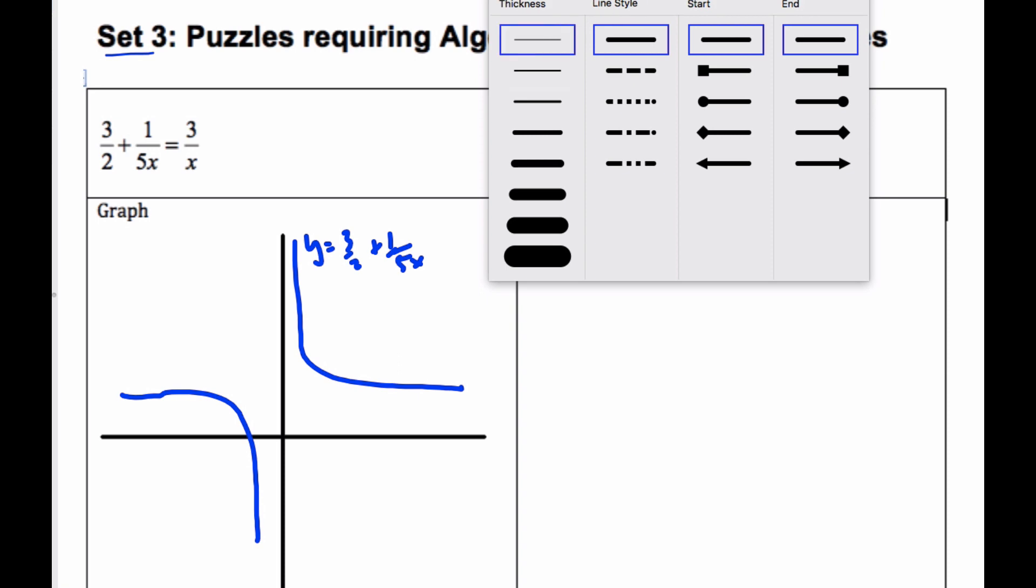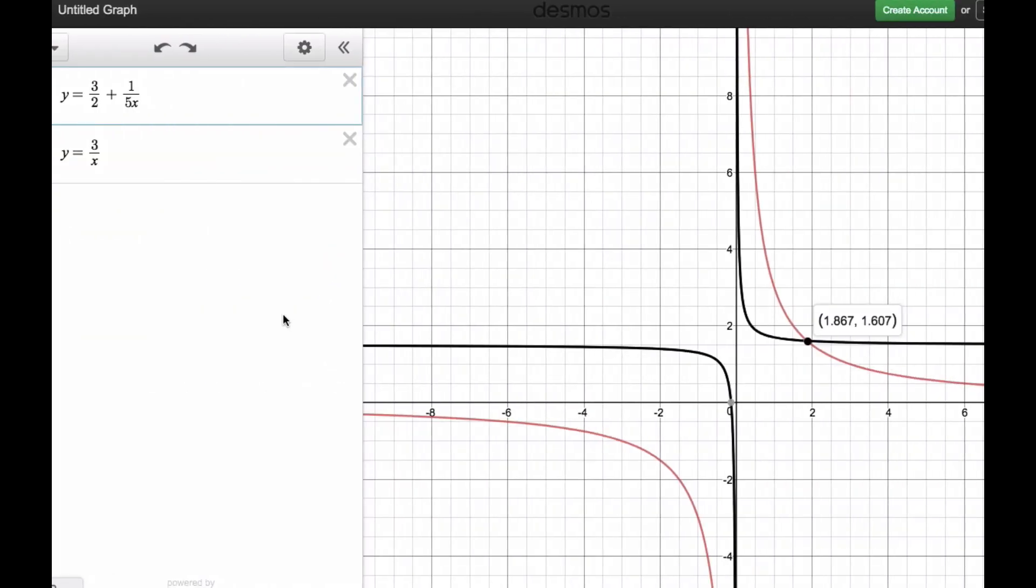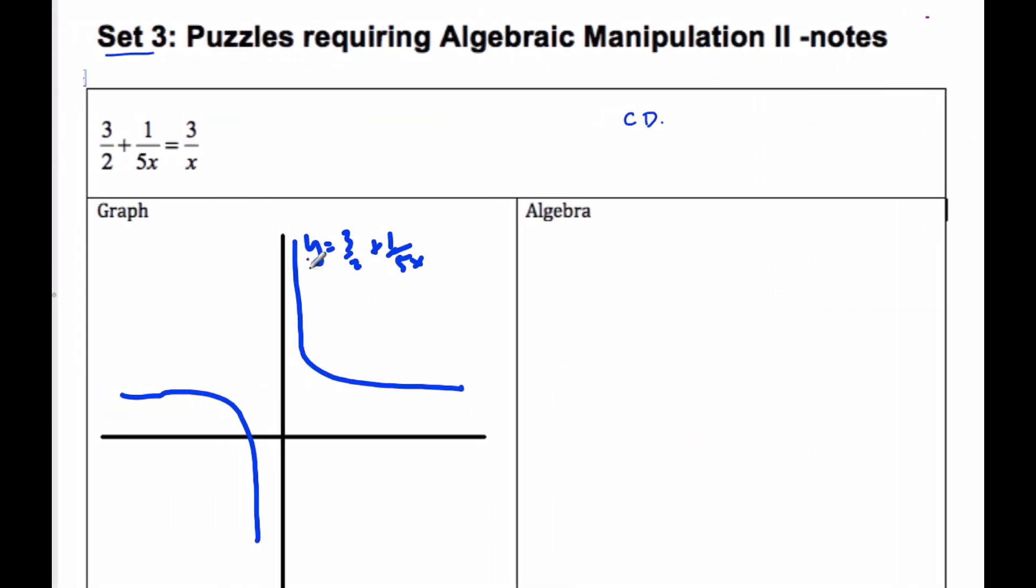Similarly, if I go change over to purple, I know that there's going to be a graph here that kind of goes like this, and like this. And this point here is x is equal to 1.867, and this is y is equal to 3 over x.